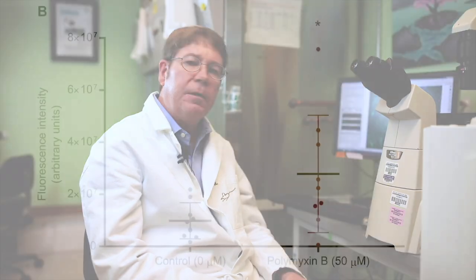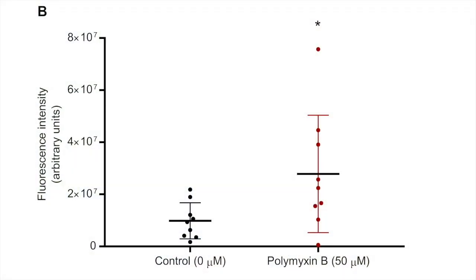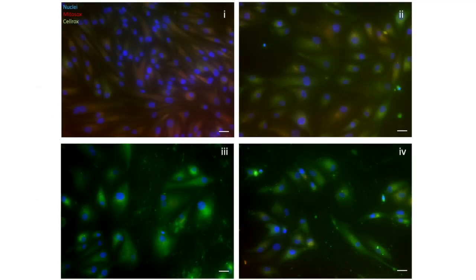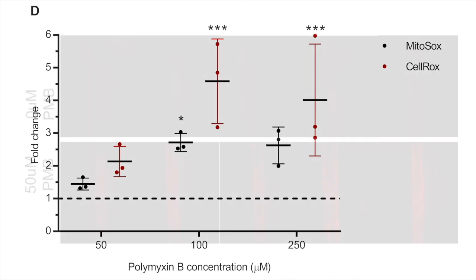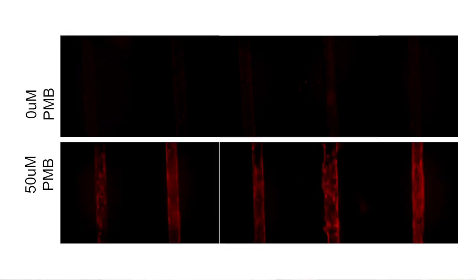Polymyxin B is an antibiotic that's been around for decades. When it first was approved and went into the clinics, it was found to be very effective against gram-negative bacteria, but it turned out to be highly toxic to the kidneys, inducing AKI, or acute kidney injury, in the majority of patients treated with it. Because of this, polymyxin B fell out of favor as a frontline therapy, but it is still commonly used for multi-drug resistant infections, though it still has high degrees of nephrotoxicity.